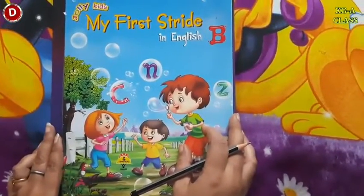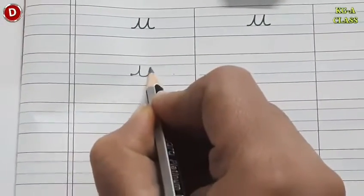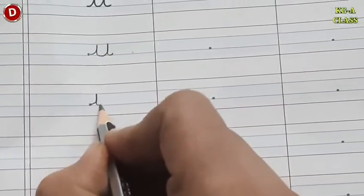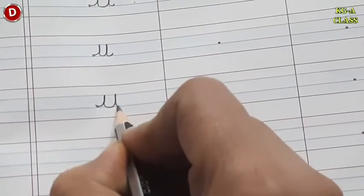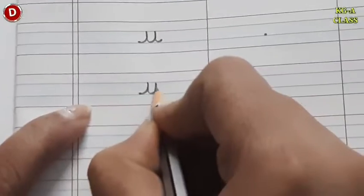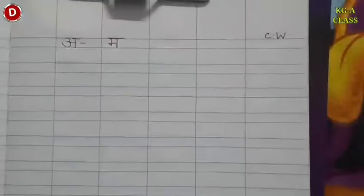Now bring your My First Write in English workbook and open page number 95. In this page we will write small cursive U and complete this page. Put your pencil on the pink dot. From here you have to make a little curve, go up, touch the first blue line, then come back on the second blue line. Again you have to go up and come back on the second blue line, and turn it a little bit. In one go you have to write — you will not remove your hand in between. In this way you have to finish this page and send its picture to me.